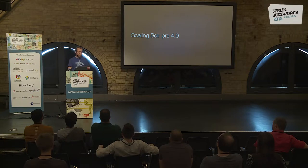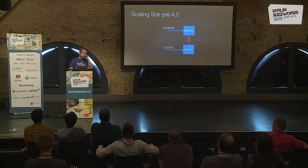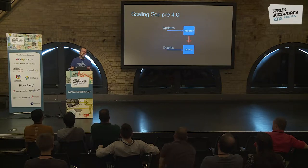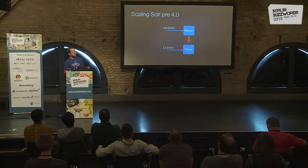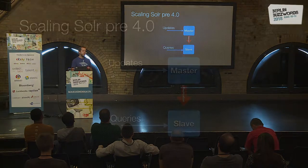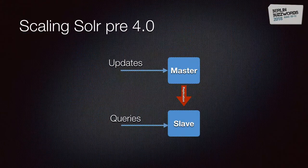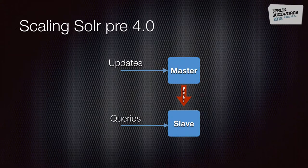Before SolrCloud, before Solr 4, the way to scale Solr was by doing a master-slave architecture, where all the updates would go to the master and all the queries would go to the slave. Then in the background, the slave would be doing segment replication and copying the latest updates from the master to the slave.